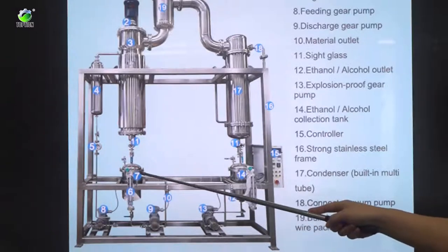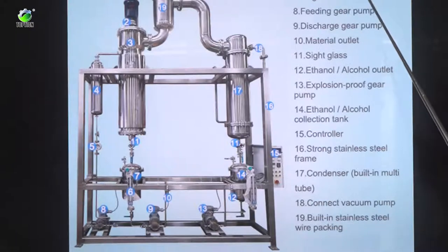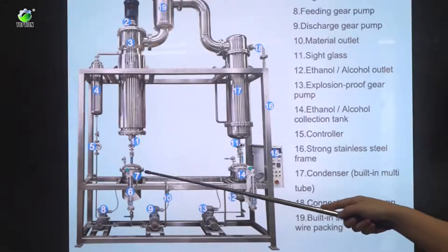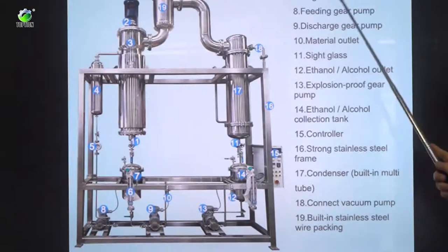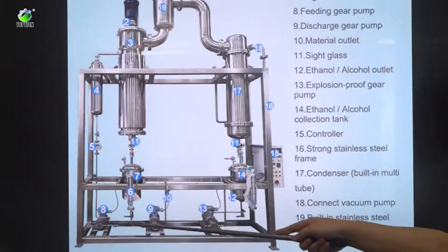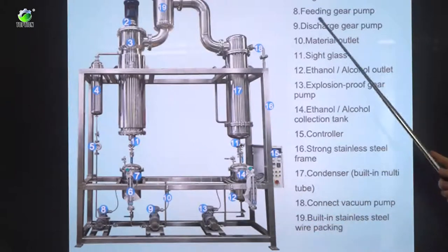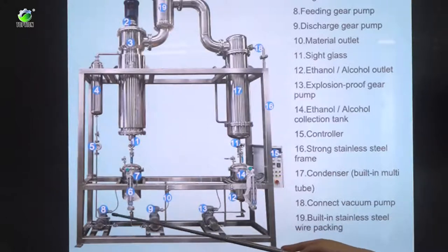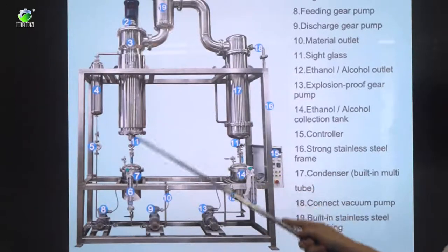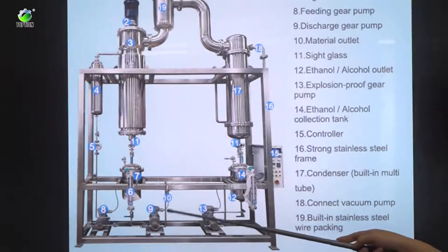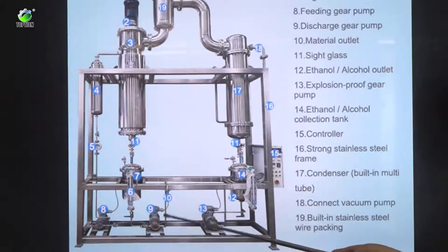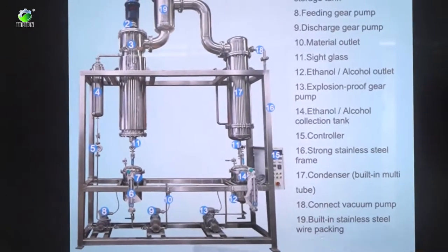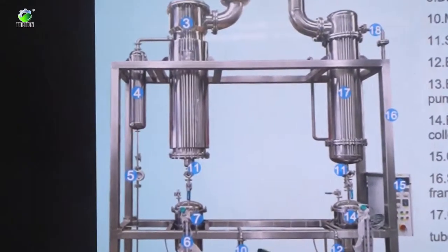And the seventh is condensed CBD oil storage tank. And here is the final product of the CBD storage tank here. And this eighth is the feeding gear pump. By these pumps the material will be feeding to the system. And this ninth is discharge pumps. After this the material will be collected. And this tenth is material outlet.